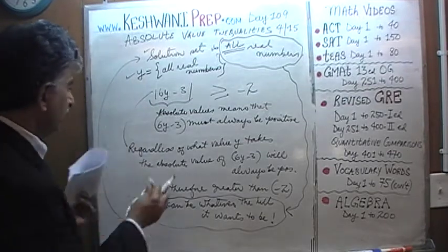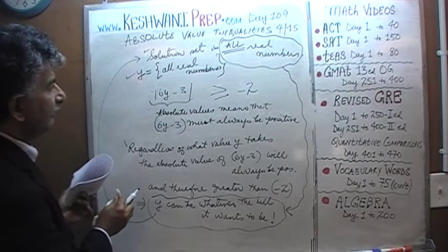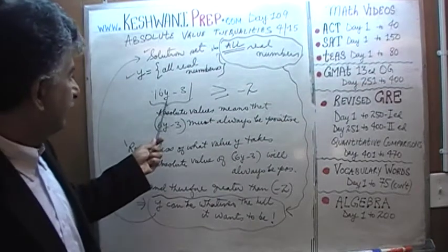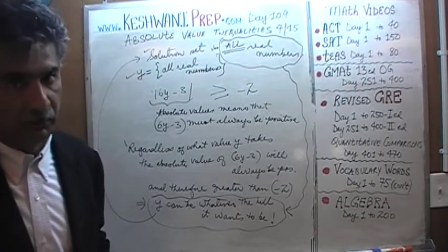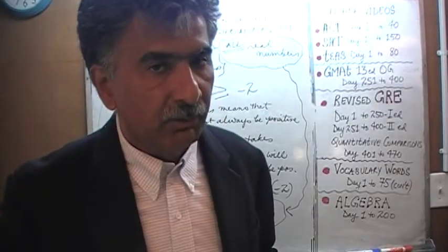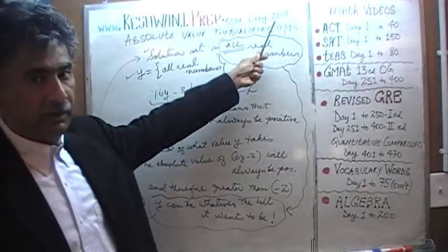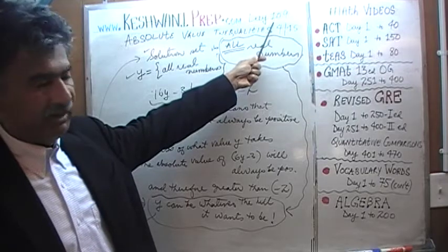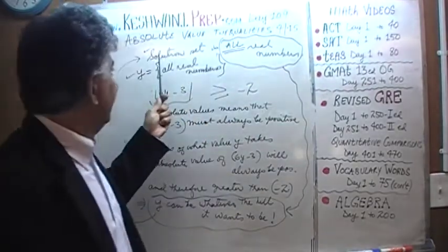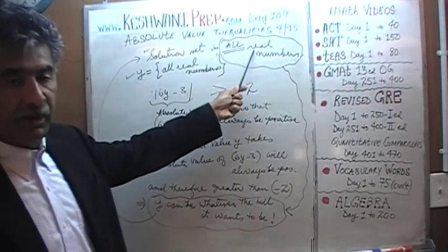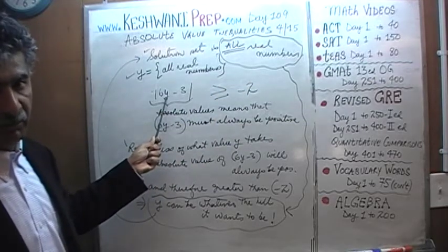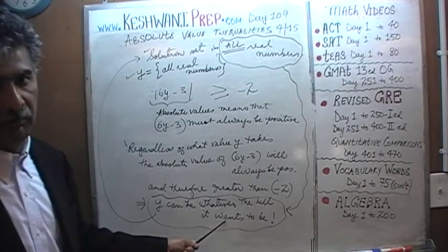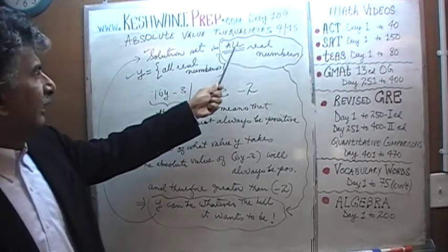Let me digress for a second. All real numbers means Y can be either a rational or an irrational number. We spent five days on the topic of rational and irrational numbers — watch lessons 101 to 105 if you haven't seen those. Real numbers are made up of rational and irrational numbers. It doesn't matter whether Y is rational or irrational, positive or negative, odd or even, a fraction or a whole number — it makes no difference at all. Solution set is all real numbers.